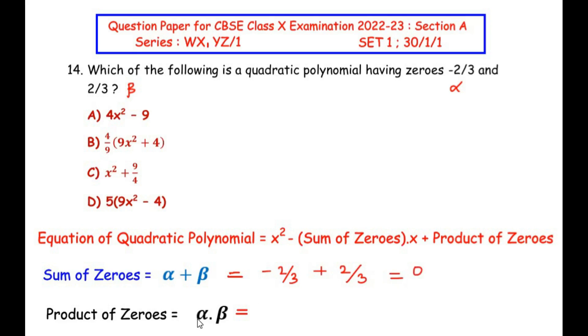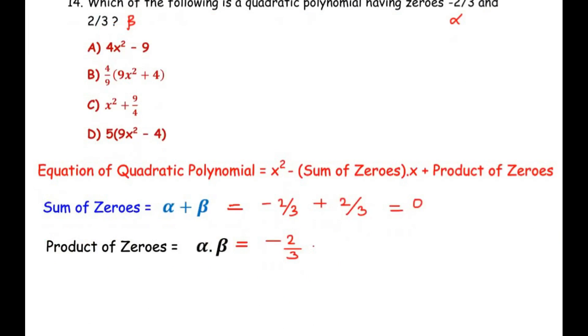Similarly, the product of zeros is α times β. So we are going to write here -2/3 times positive 2/3. So here the numerators will multiply together. So -2 times 2 gives us -4 over 3 times 3 gives us 9.